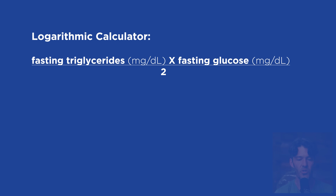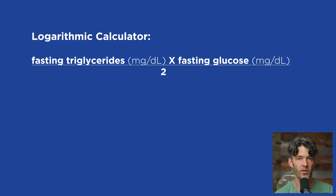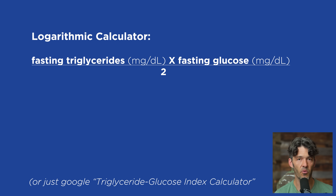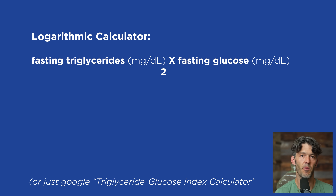How do you get the number for your triglyceride glucose index? Go into ChatGPT or Google, type in 'logarithmic calculator,' and type in your triglycerides in milligrams per deciliter multiplied by your glucose, divided by two. This gives you the logarithmic scale of that value. Ideally, this number should be under eight. As that number gets higher — closer to 10 — your risk of dying from all causes, especially cardiovascular disease-specific causes, increases dramatically.